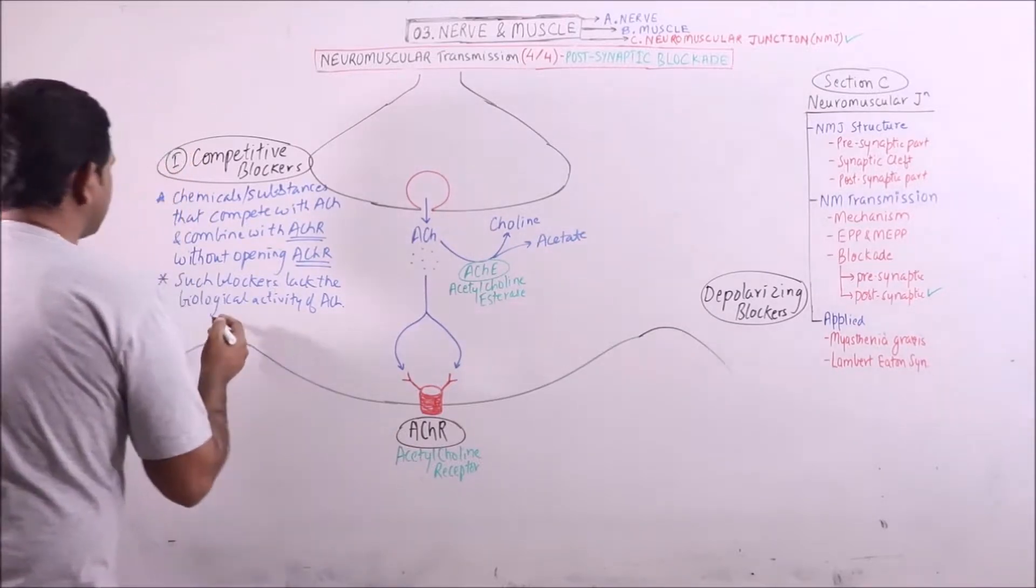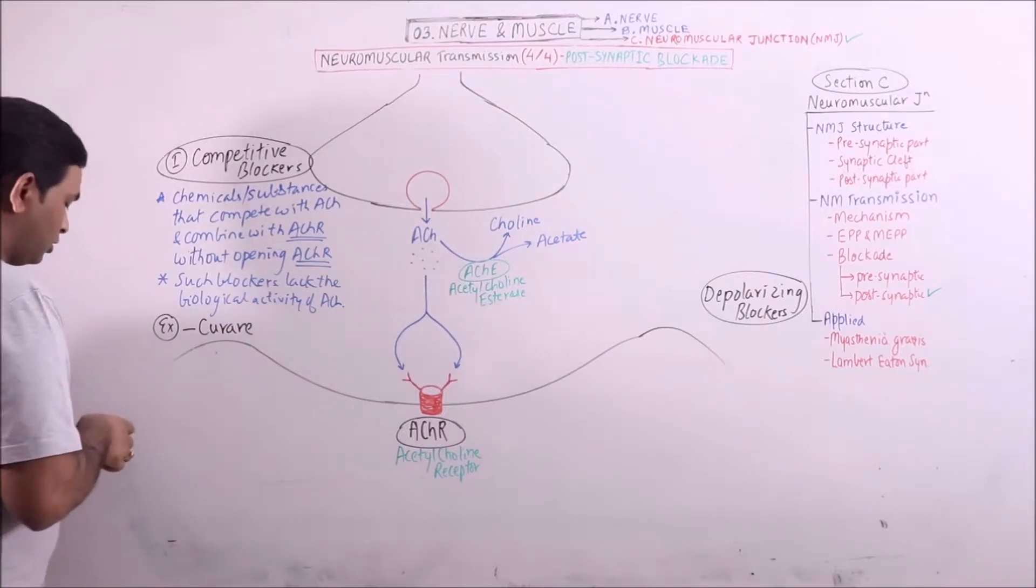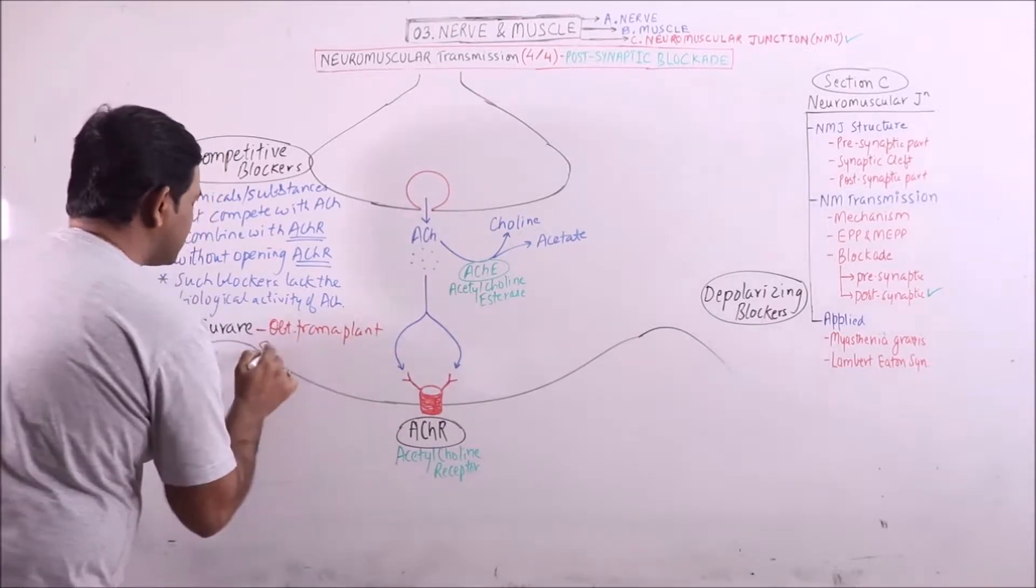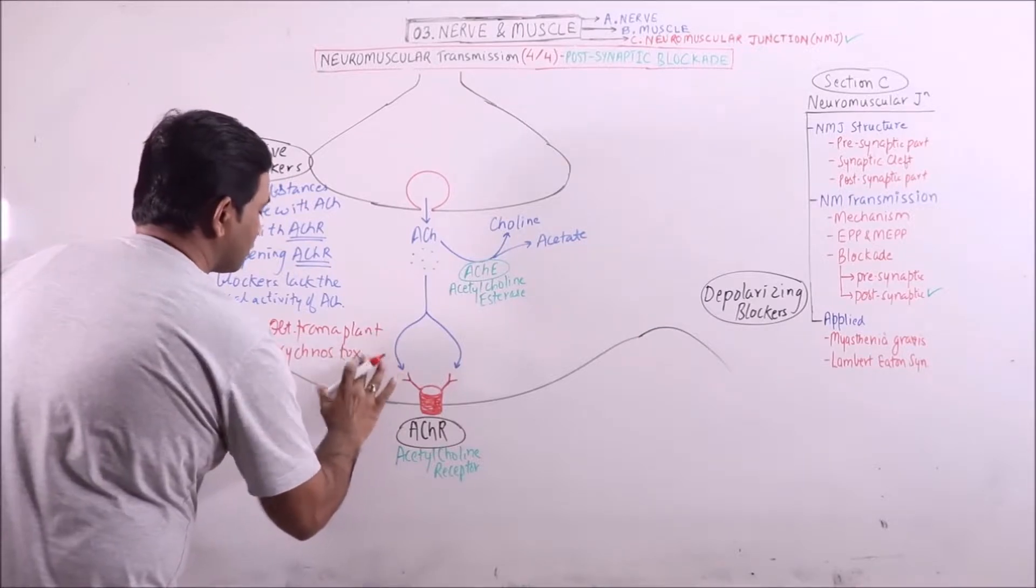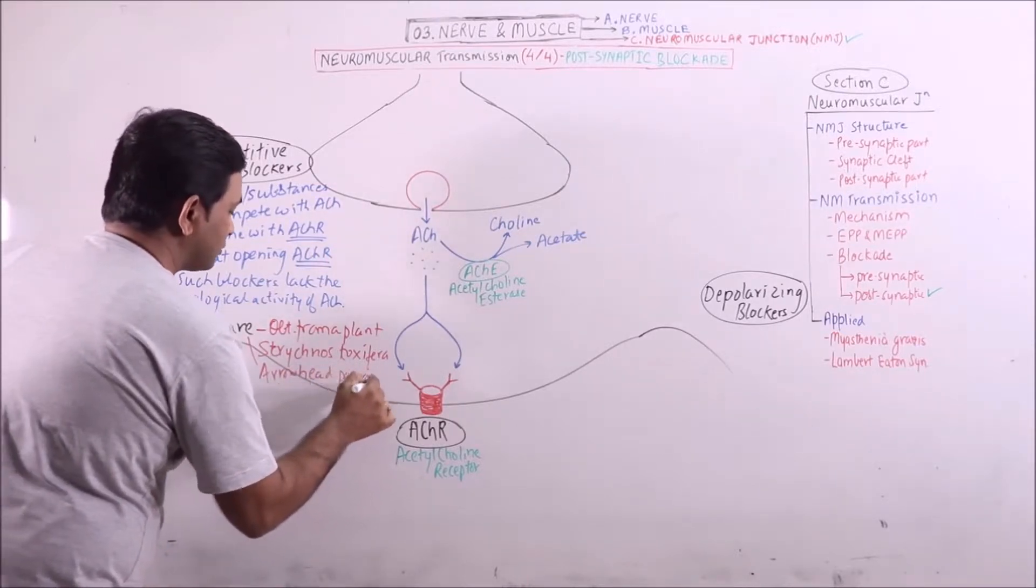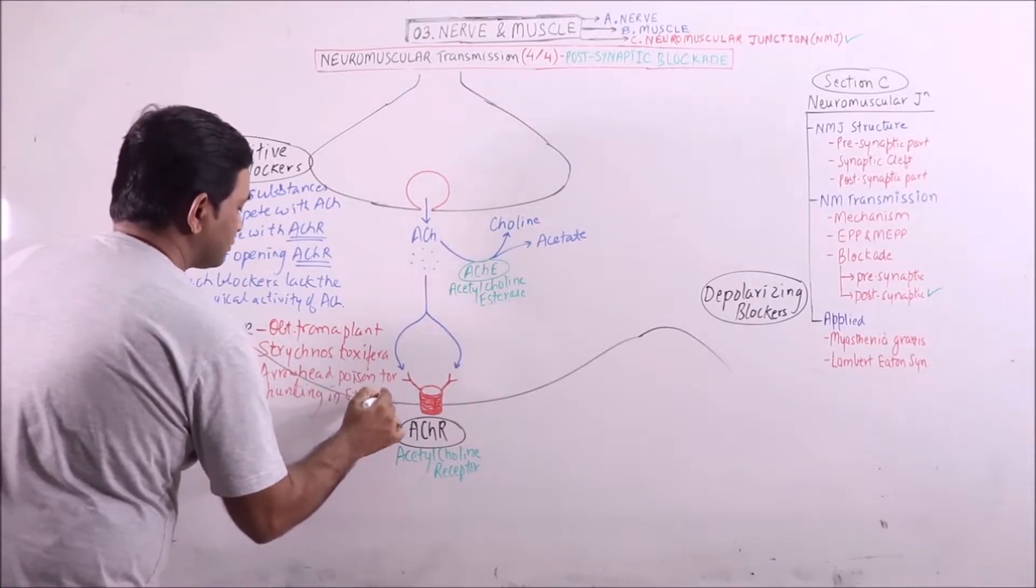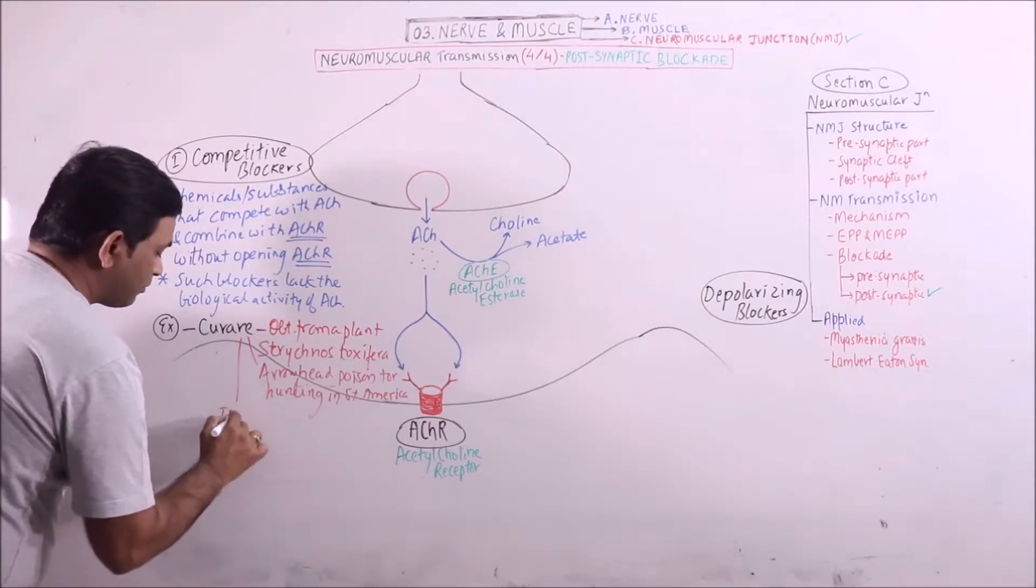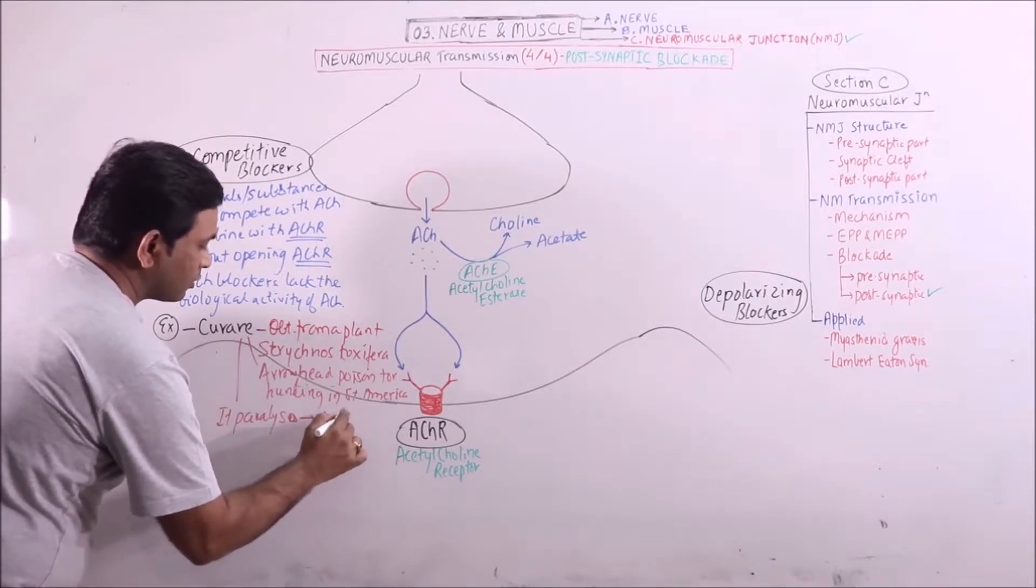Examples include curare, obtained from the plant Strychnos Toxifera. It is used as arrowhead poison for hunting in South America, and death will occur.